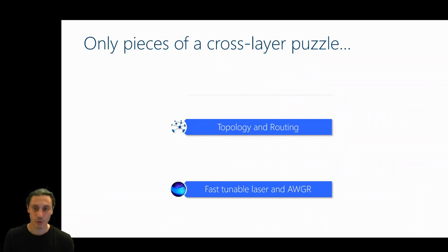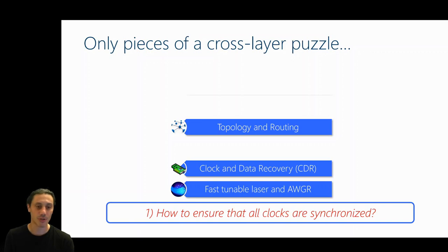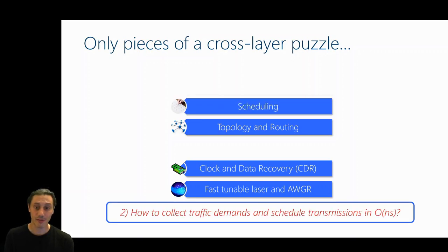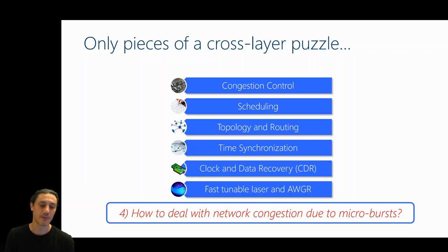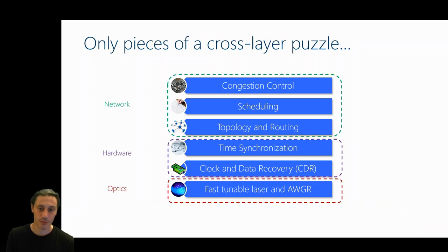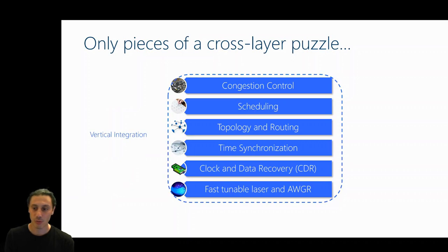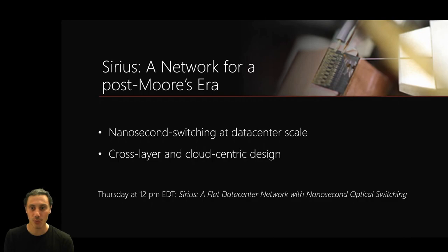Now this is how we can create a data center scale topology with fast tunable lasers and AWGRs. However, switching and topology are just two pieces that enable a data center network. For example, we need to ensure that CDR locking times are extremely fast as the topology reconfigures. Additionally, we need to be able to provide a fast data center-wide scheduling mechanism. We need to make sure that all clocks across all these components are synchronized and even deal with traffic characteristics such as microbursts, which are common in data center environments. As one can observe, these problems span across different communities, and traditionally different disciplines would actually address them. As in the project IRIS, at Microsoft Research Cambridge, we look at the problem holistically, co-designing across layers to provide a vertically integrated solution to the problem. I invite you to read the SERIUS paper and attend the SERIUS project talk on Thursday to find out more details on how nanosecond switching can be used to build a data center network.